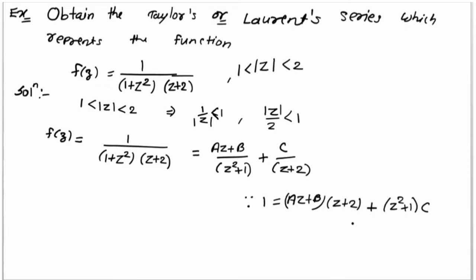1 = (Az+B)(z+2) + (z²+1)C. Now find the values A, B, C. To find C value, put z = -2. So left hand side 1 equals, if you put z = -2, the first bracket is 0. So 1 = 5C, that means C = 1/5.